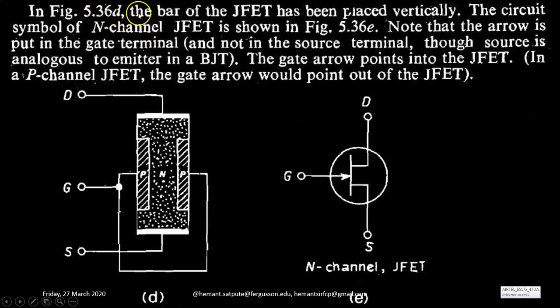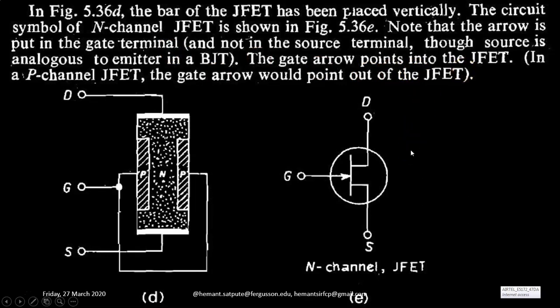Now, in figure D, the bar of JFET has been placed vertically. The circuit symbol of N-channel JFET is shown in figure 5.36E. Note that the arrow is put on the gate terminal and not on the source terminal, though source is analogous to emitter in BJT. The gate arrow points into the JFET. In a P-channel JFET, the gate arrow would point out of the JFET. Here is a crucial difference between BJT and FET: in BJT, we mark the arrow on the emitter lead, but in JFET, we mark the arrow on the gate lead. Also, the direction of arrow is into the terminal for N-channel JFET and out of the terminal for P-channel JFET.